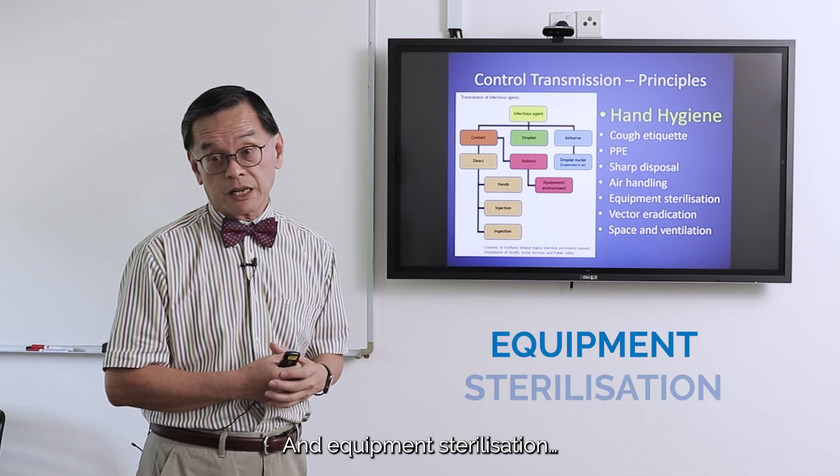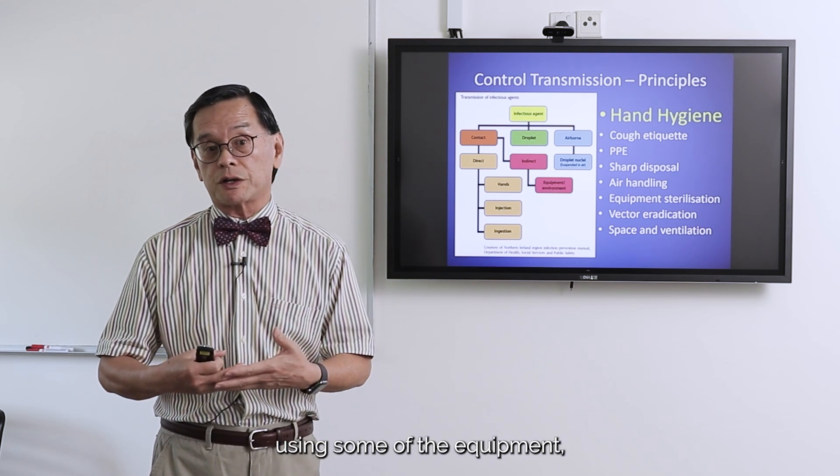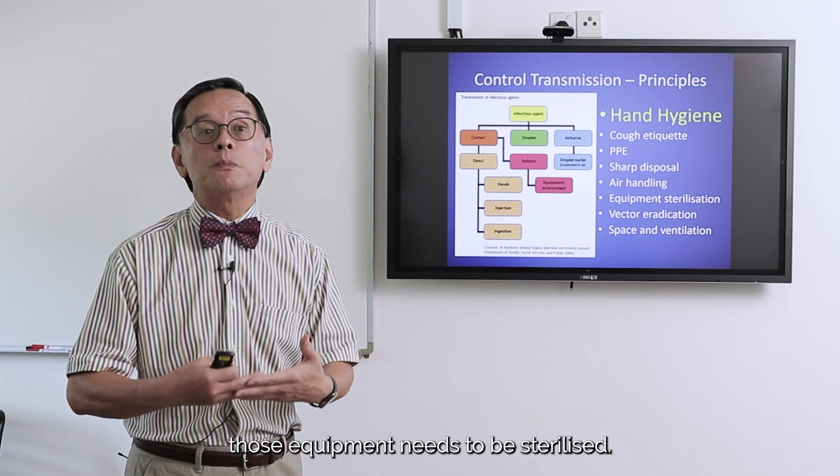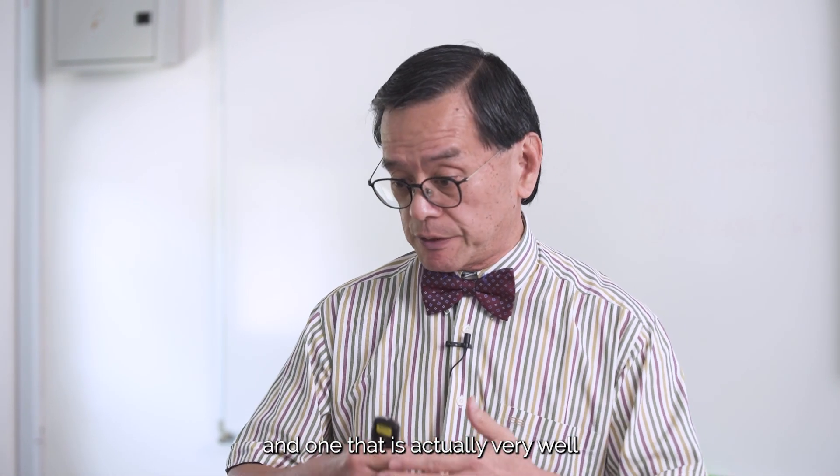Equipment sterilization is essential — if you have performed a medical procedure using equipment, that equipment needs to be sterilized. Vector eradication is another measure: if an infection is caused by a vector, a very well-documented and locally relevant example in Malaysia is dengue. The Aedes aegypti mosquito is one of the vectors that transmit dengue.